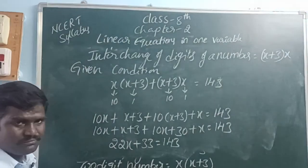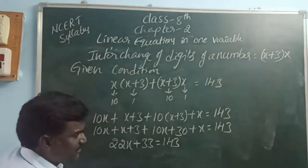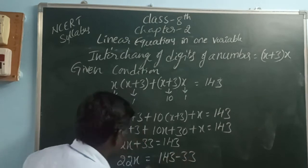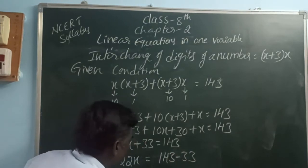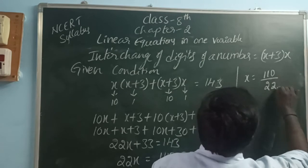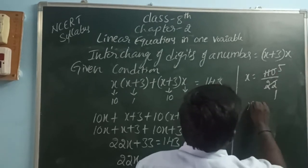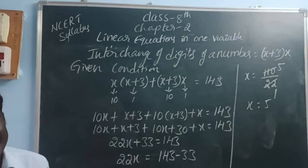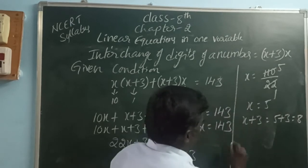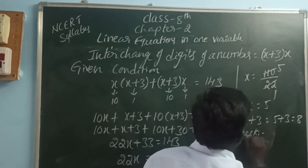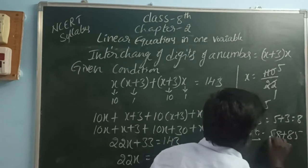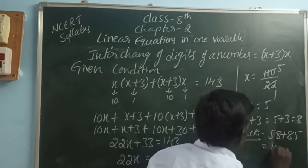Moving 33 to the right side: 22x equals 143 minus 33, which is 110. So x equals 110 divided by 22, giving x equals 5. One digit is 5, and the other digit is x plus 3 equals 8. The original number is 58. Check: 58 plus 85 equals 143. Correct.